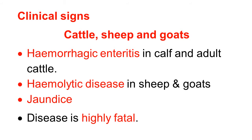Clinical signs in cattle, sheep and goats. In cows, there is hemorrhagic enteritis in calves and adult cattle, with severe hemorrhage in the faeces causing dysentery with blood. Hemolytic disease in sheep and goats is also a serious consequence. On destruction of the hemoglobin, there is jaundice. The disease is highly fatal, and the carcass is yellowish due to jaundice or icterus. So, the disease is synonymously called yellow lamb disease.